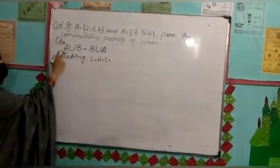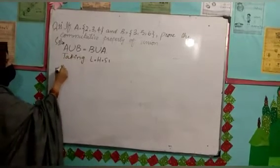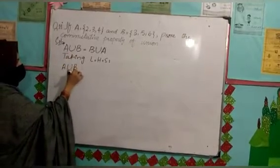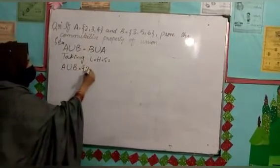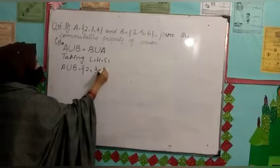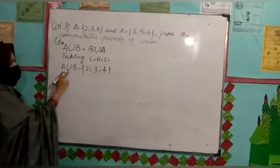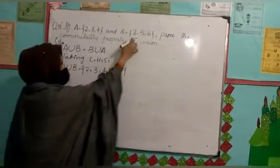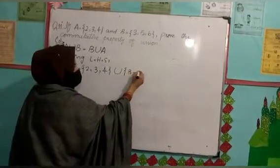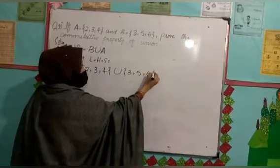Left-hand side, we have A union B. A union B, we solve now. A set is {2, 3, 4}. Sign is union. So we write union B. B set is {3, 5, 6}.